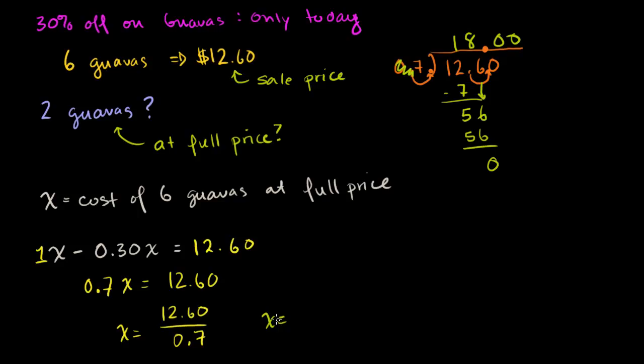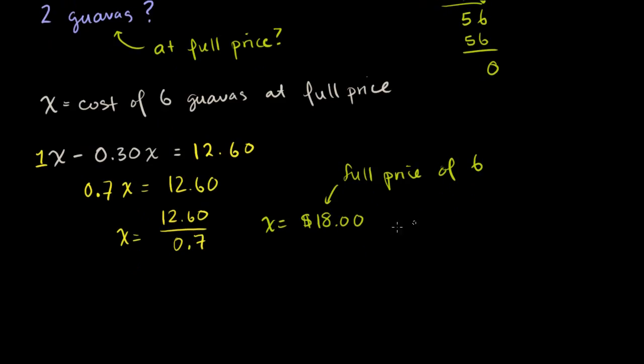So x is equal to $18. Remember what x was. x was the full price of 6 guavas. Now the question is, how much will 2 guavas cost me at full price? Well this is full price of 6. So you immediately could figure out what's the full price of 1 guava. You divide 18 by 6, so 18 divided by 6 is $3.